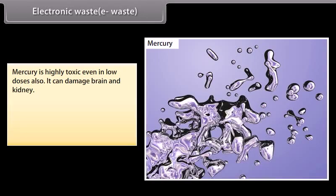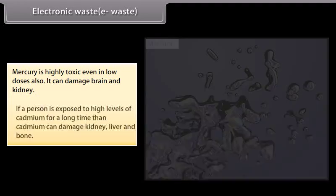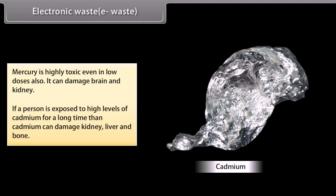Mercury is highly toxic even in low doses and it can damage the brain and kidneys. If a person is exposed to high levels of cadmium for a long time, cadmium can damage the kidney, liver, and bone.